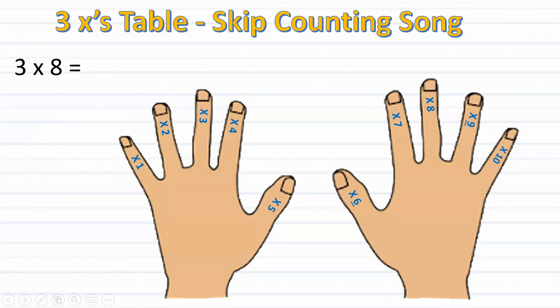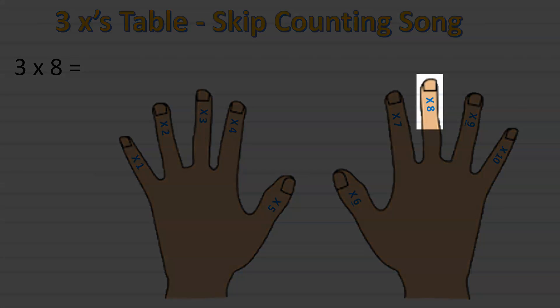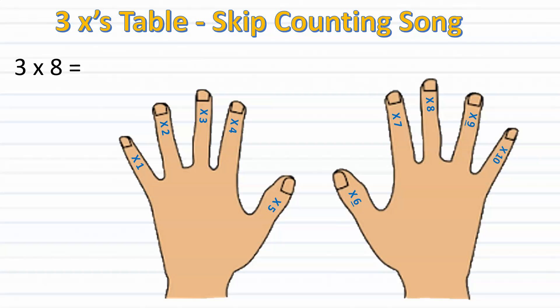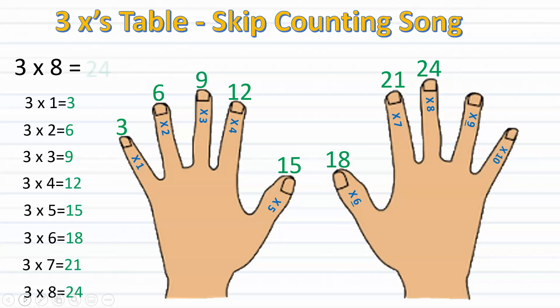Next we're going to be multiplying three times eight. Keep in mind we're going to stop at the eighth finger and whatever number we land on when we reach the eighth finger will be the product. So let's begin. Three, six, nine, twelve, fifteen, eighteen, twenty-one, twenty-four. I stop at the eighth finger and I land on twenty-four. Therefore I know that three times eight equals twenty-four.